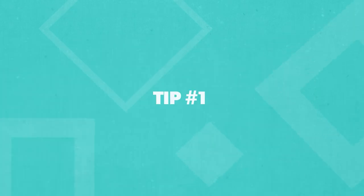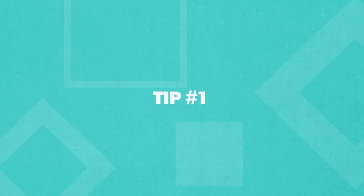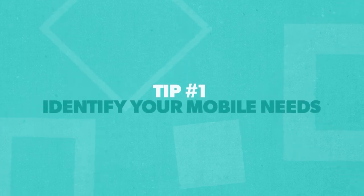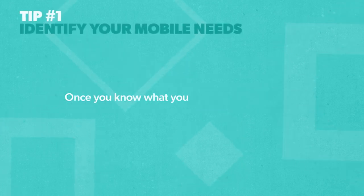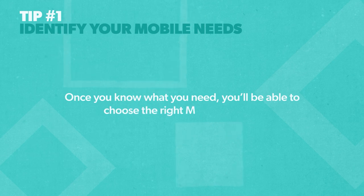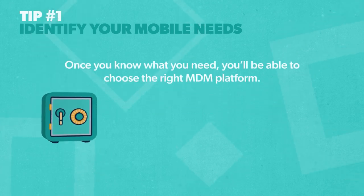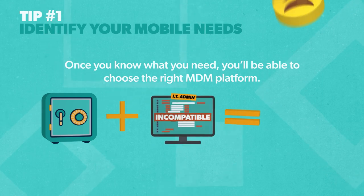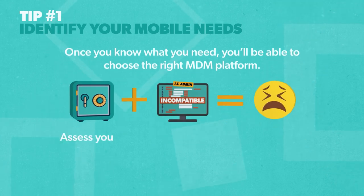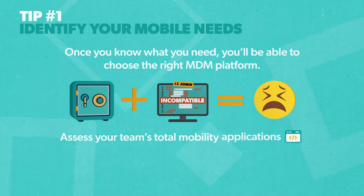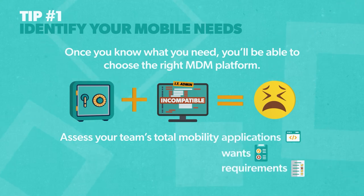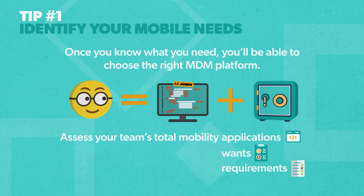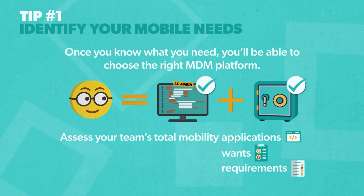Tip number one: the first and most important thing is to identify your mobile needs. Once you know what you need, you'll be able to choose the right MDM platform. The worst mistake you can make is dropping cash on software that doesn't meet all of your needs. Assess your team's total mobility applications, wants, and requirements. Thinking ahead will help avoid having to replace the original software or spend more on additional integrations down the line.